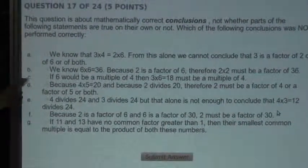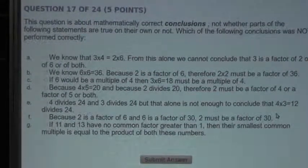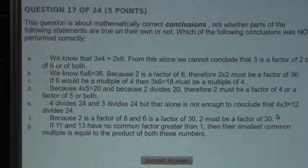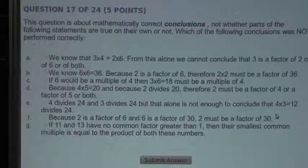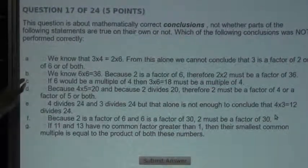Now, let's look at Statement C. If 6 would be a multiple of 4, then 3 times 6 equals 18 must be a multiple of 4. Well, if 4 would be a factor of 6, then 4 would have to be a factor of any multiple of 6. So Statement C is correct.